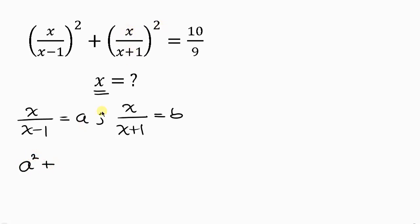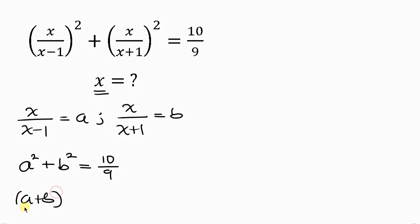This will be a² plus b² equal to 10/9. There is an identity for the sum of two squares: a² + b² = (a+b)² - 2ab. This is the identity, and this equals 10/9.